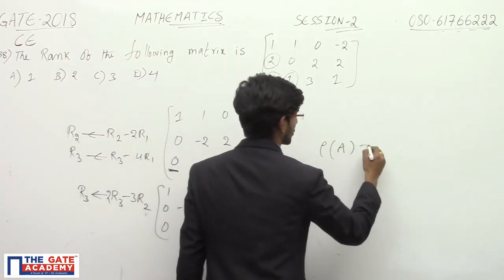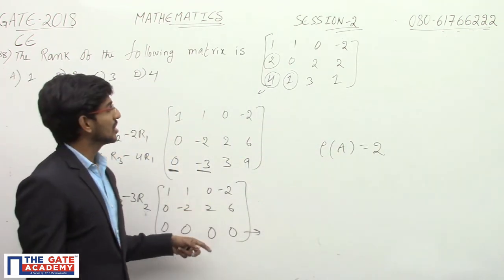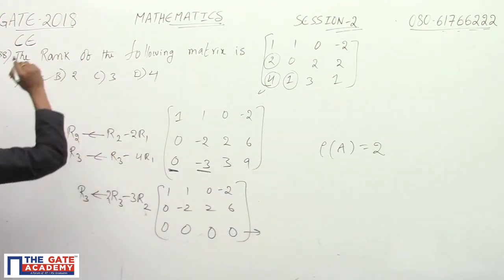rank of A equals the number of non-zero rows. Number of non-zero rows is two, so rank is 2. Option B is correct.